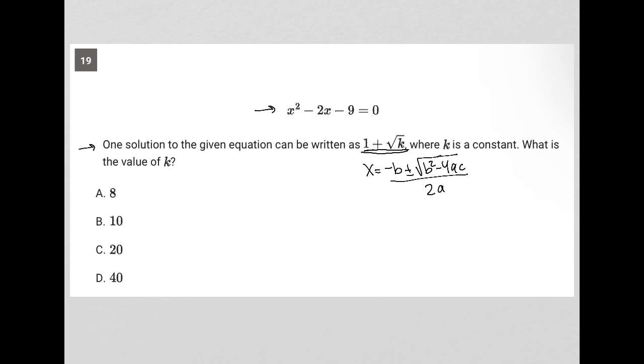Because we just want the 1 plus, I'm going to just think of this as negative b plus. So that's what I'm going to find, b squared minus 4ac all over 2a, because I don't care about the minus side of that.